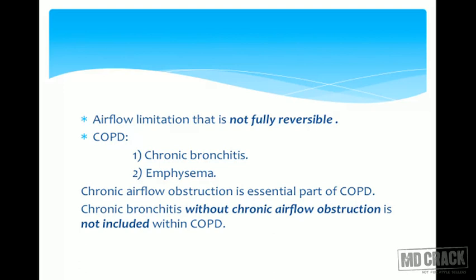COPD includes two major diseases: chronic bronchitis, which is a clinical disease, and emphysema, which is an anatomical condition. Chronic airflow obstruction is the basic and most important component of COPD — every patient must have the component of airflow obstruction. If a patient of chronic bronchitis does not have chronic airflow obstruction, you cannot label that patient as COPD.